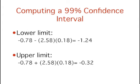To calculate the upper limit, take the Z' value plus 2.58 multiplied by 0.18 to get negative 0.32.